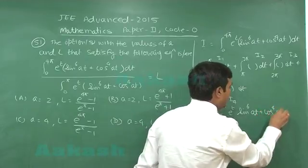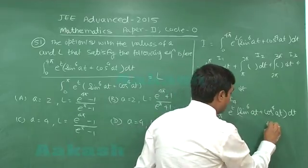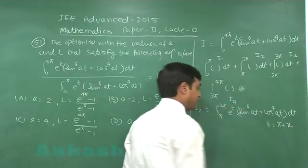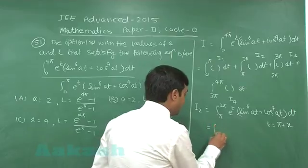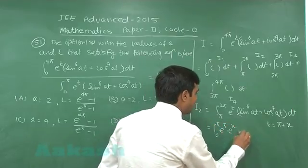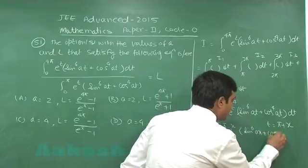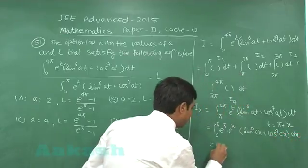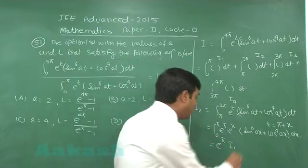If we substitute t = π + x into I₂, it changes to the integral from 0 to π of e^π · e^x (sin(6ax) + cos(4ax)) dx, which equals e^π · I₁.